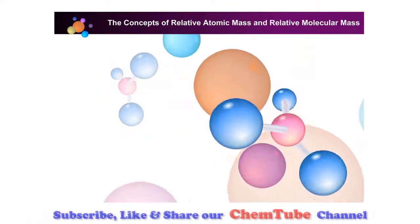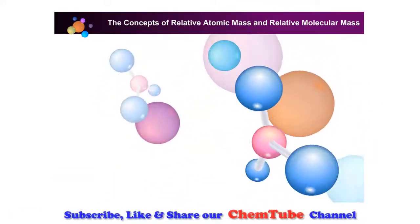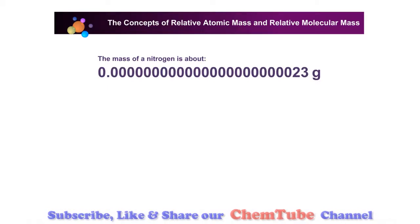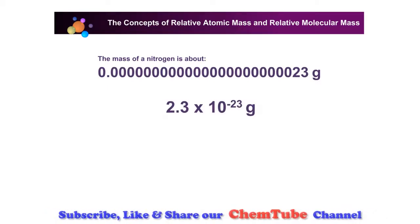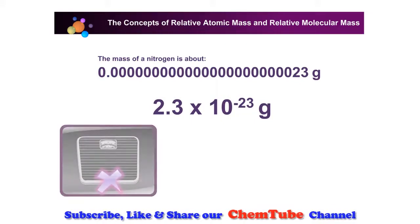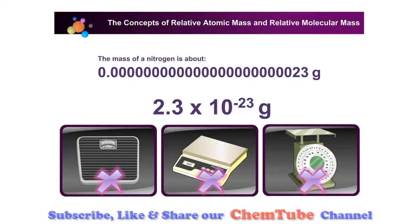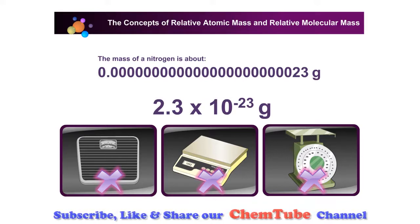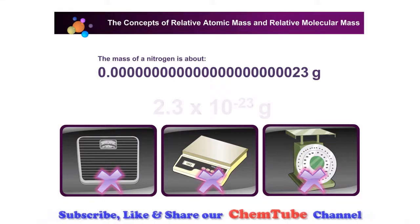The mass of an atom is too small to measure. For example, the mass of a nitrogen atom is extremely small — about 2.3 times 10 to the power of negative 23. Hence there is no weighing machine that can give the reading of the mass of an atom. It would be too difficult to work with such small numbers.